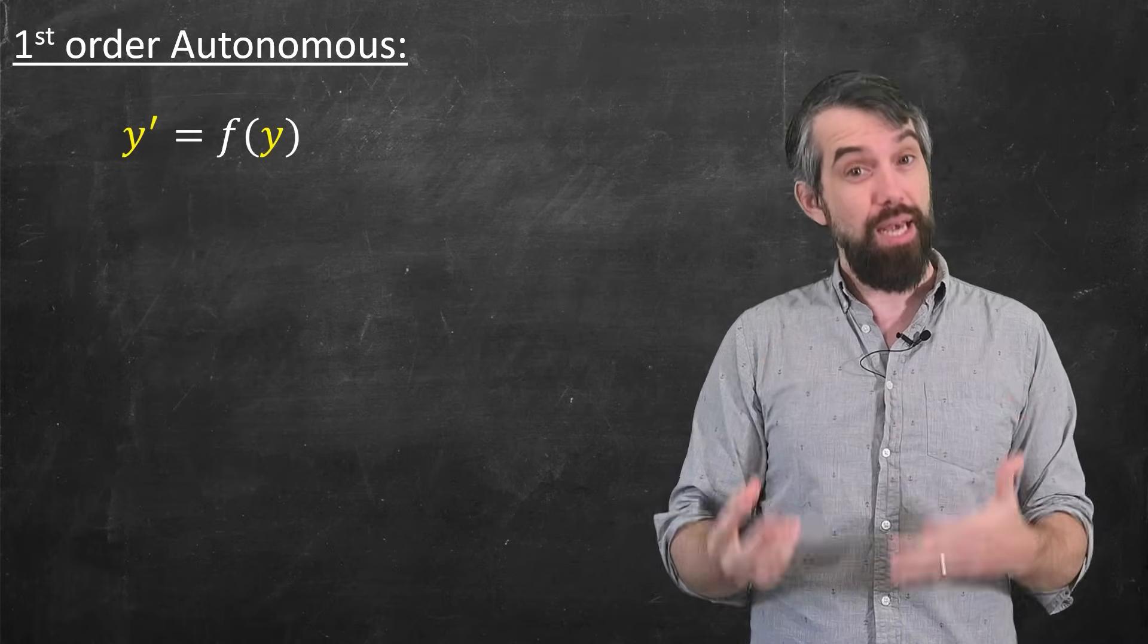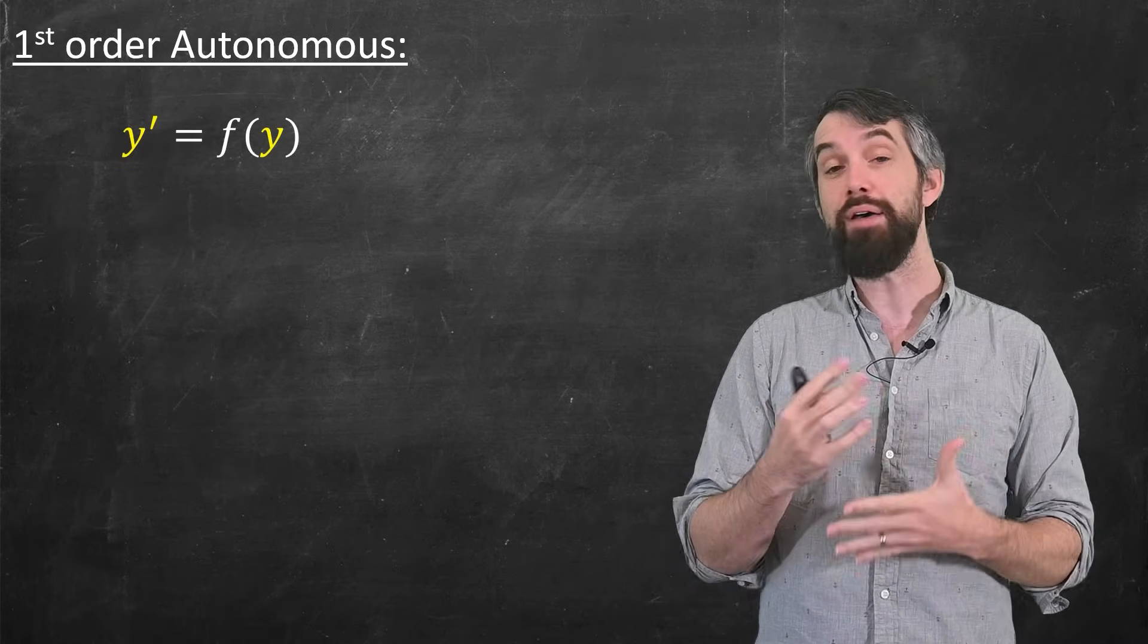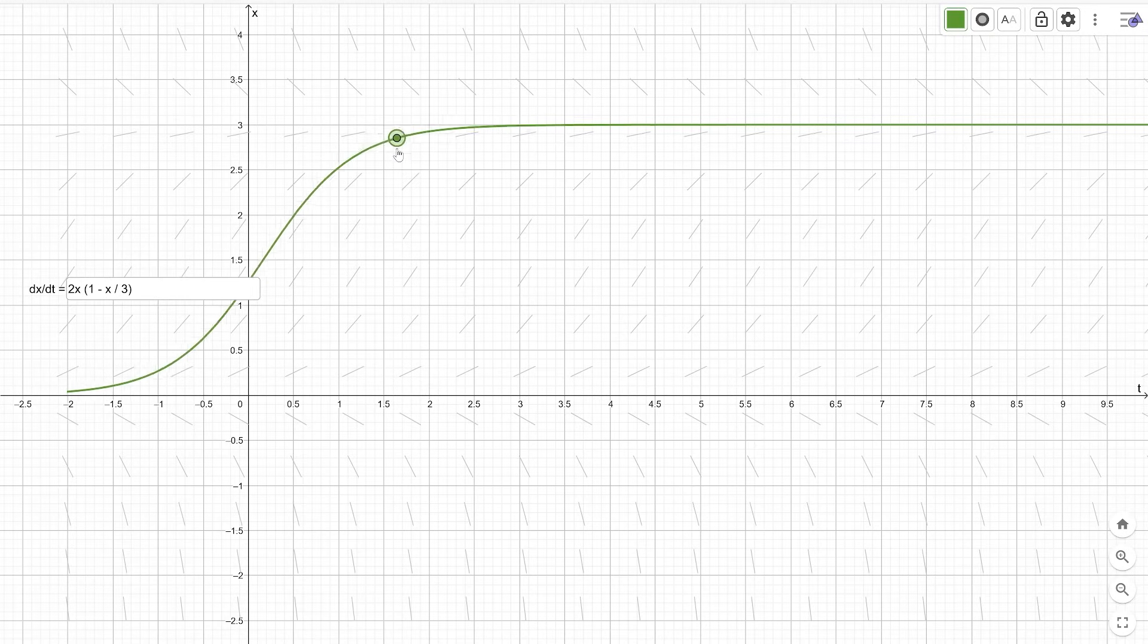But autonomous equations are really nice because we have a lovely graphical approach. You can create something called a slope field here, where these little slopes at every point are just given by the derivative. This tells you you're f prime.